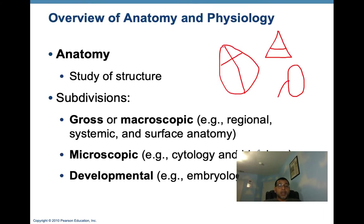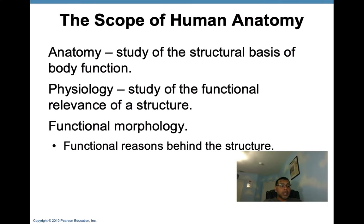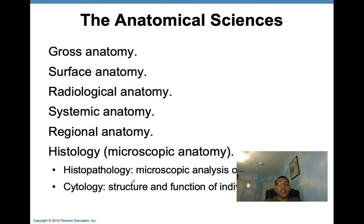Physiology studies the function of the body — how the body parts work and carry out their life-sustaining activities. The anatomical sciences include gross anatomy, surface anatomy, radiological anatomy, systemic anatomy, regional anatomy, and histology. Make sure you read the chapter and understand each of these different examples very well.